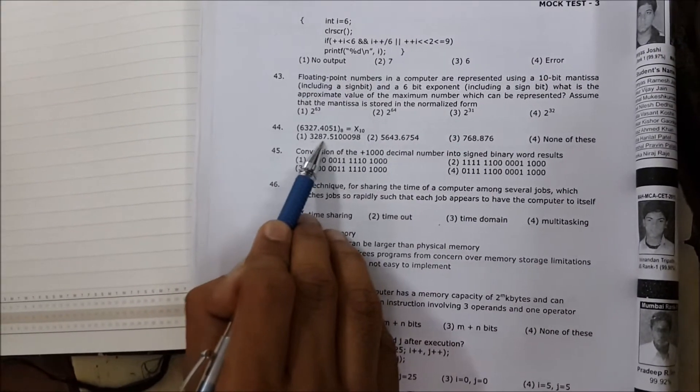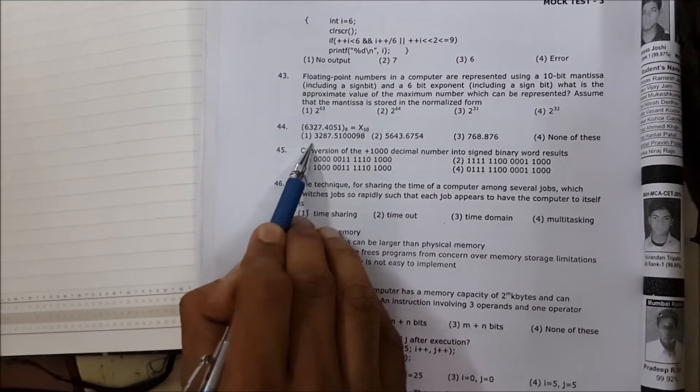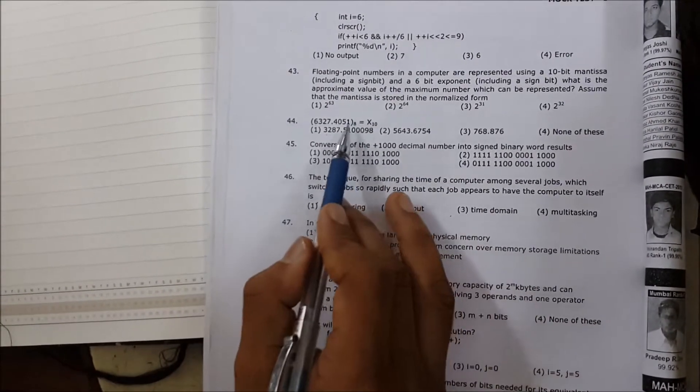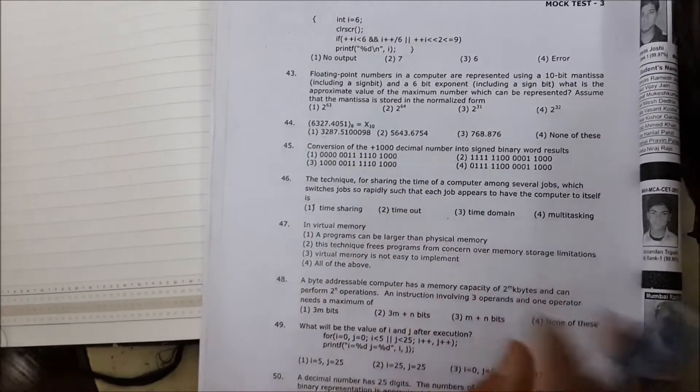If you find the decimal format of the number before the decimal point, you will get the answer, because all options are different. You don't need to find the digits after the decimal point. So let's do the calculation.